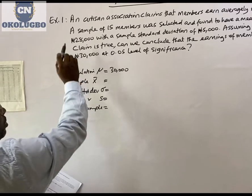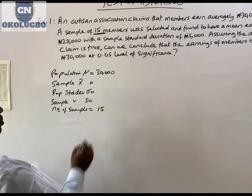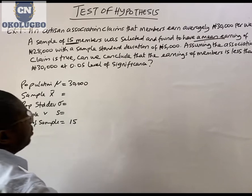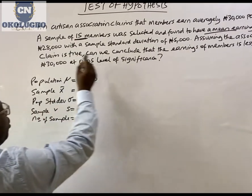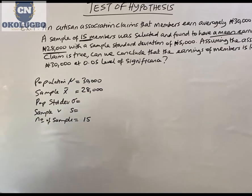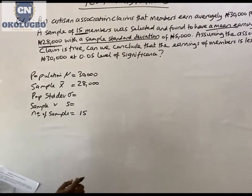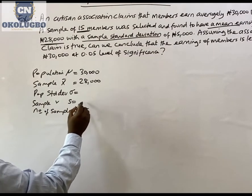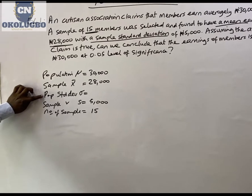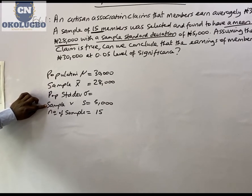Now, the sample mean: a sample of 15 members was selected — so the number of samples is 15 — and found to have a mean of 28,000. So the sample mean is 28,000. We are also given a sample standard deviation of S = 5,000. When you are given a sample standard deviation, you will not be given the population standard deviation, and vice versa.